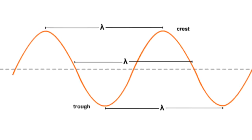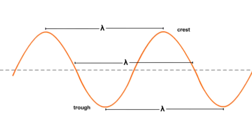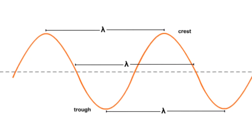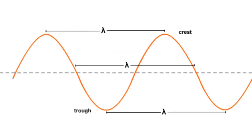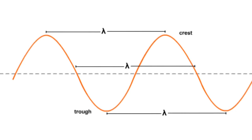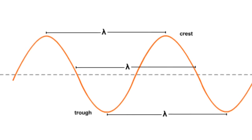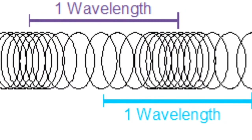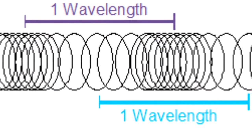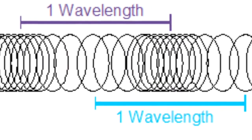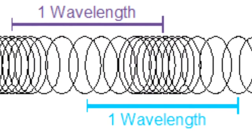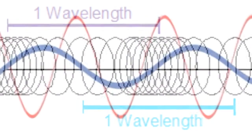Of course, waves also have a way to measure their distance. You can measure the wavelength of a transverse wave from crest to crest or trough to trough. You can measure the wavelength of a longitudinal wave from compression to compression or rarefaction to rarefaction.